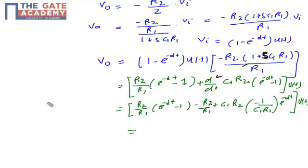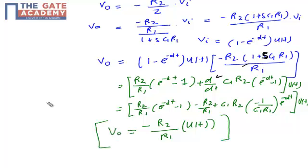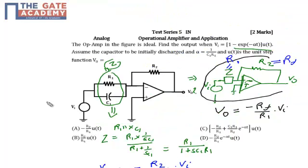Cutting down the common terms, the final expression simplifies to V0 = −(R2/R1) · u(t). So the correct option is option A. Thank you.